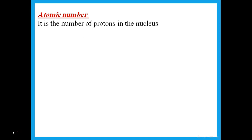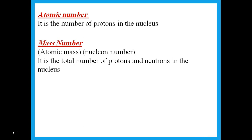We have two numbers for each atom. The atomic number is the number of protons in the nucleus — this is unique for every element and never changes. The mass number is the number of protons and neutrons present in the nucleus. The sum of protons and neutrons is called the mass number, the atomic mass, or the nucleon number.